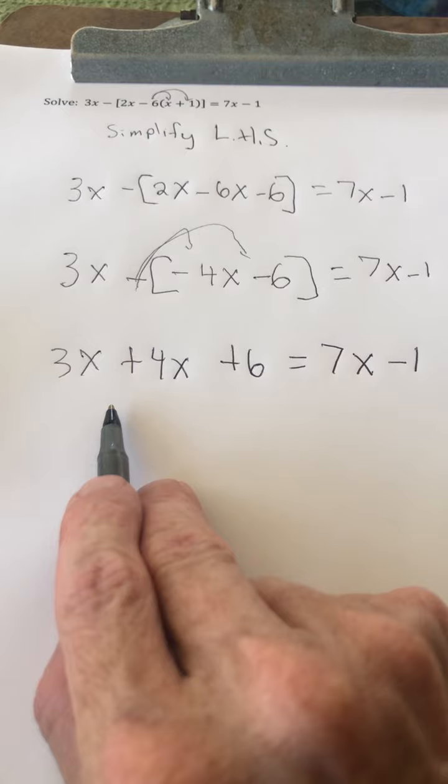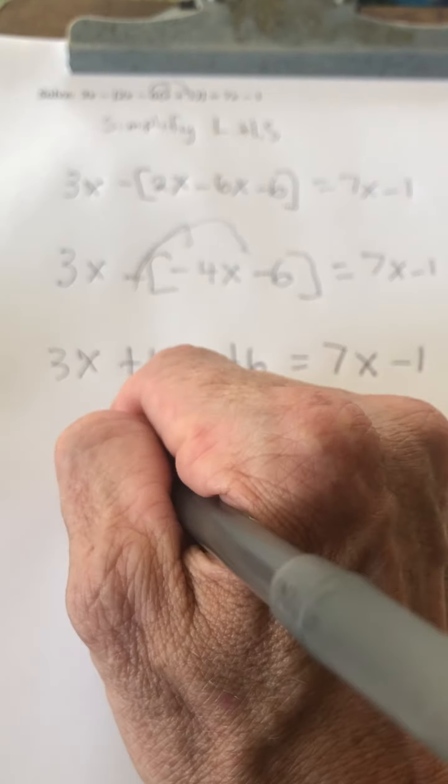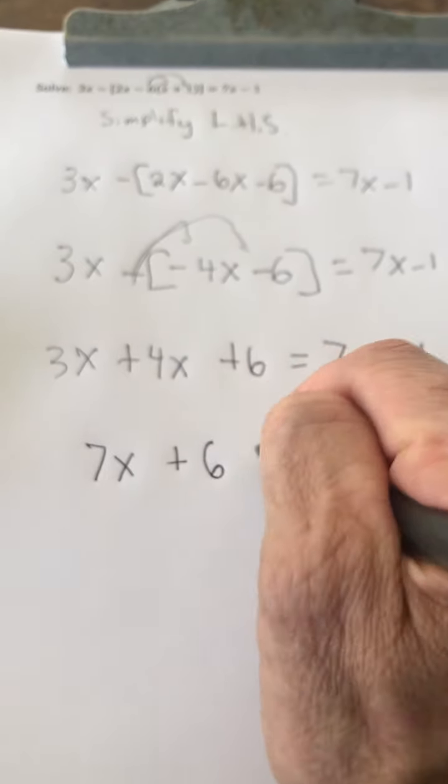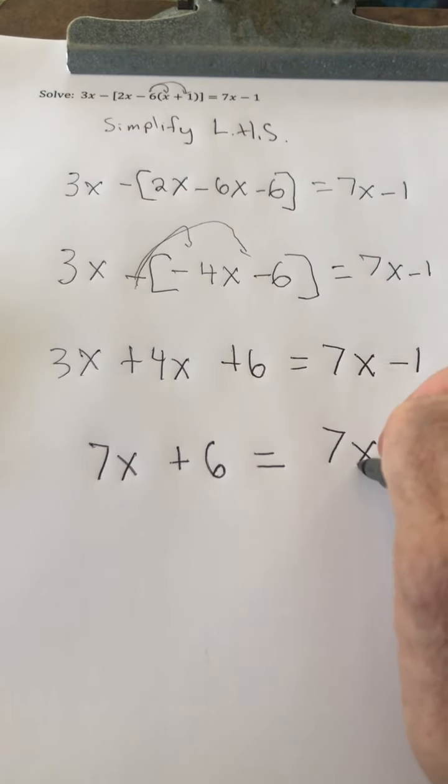Combining like terms on the left-hand side, 3x plus 4x is 7x, so we have 7x plus 6 equals 7x minus 1.